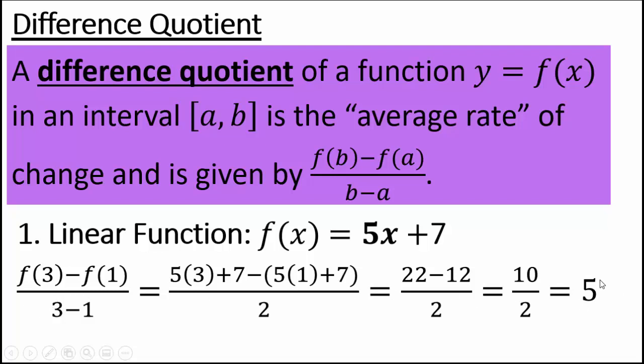And then the whole thing is divided by 3 minus 1 or 2. If you simplify, you'll see we get 5. And that's not a surprise because 5 is the slope of the line. If we're looking at a line that passes through (3, 22) and (1, 12), then that's this slope of 5 because the rate of change is constant.